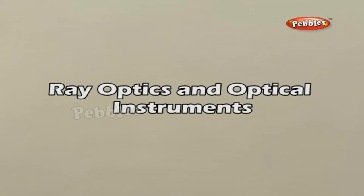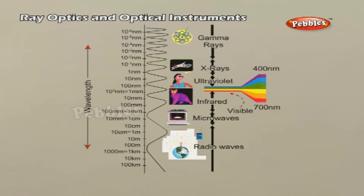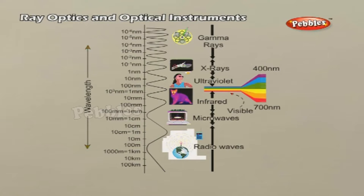Ray Optics and Optical Instruments. Introduction: Nature has endowed the human eye with the sensitivity to detect electromagnetic waves within a small range of the electromagnetic spectrum. Electromagnetic radiation belonging to this region of the spectrum is called light. It is mainly through light and the sense of vision that we know and interpret the world around us.